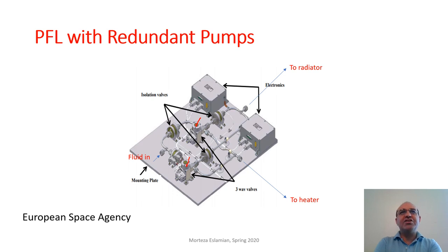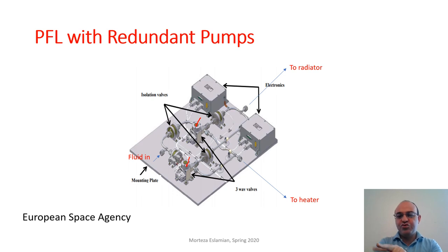This is the case for the International Space Station — recently one of the pumps failed, and the other pump was turned on while astronauts fixed the failed pump to ensure two pumps are always available. If one fails, the other is immediately turned on to do the job.